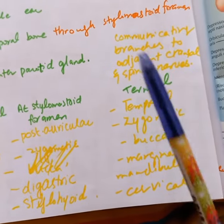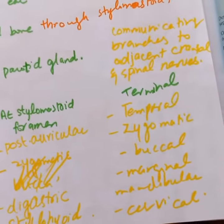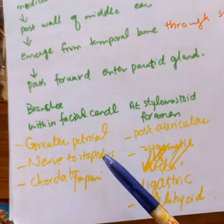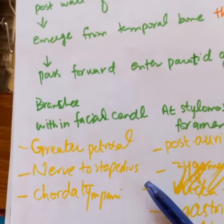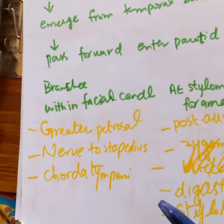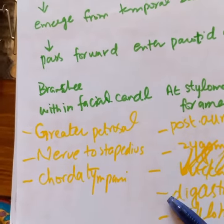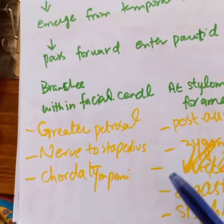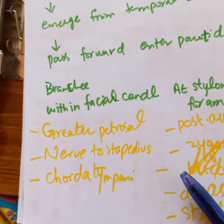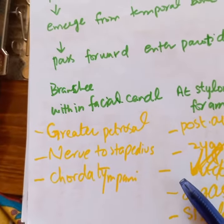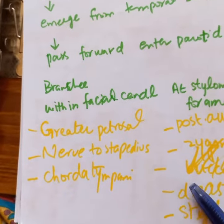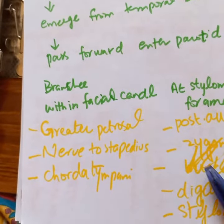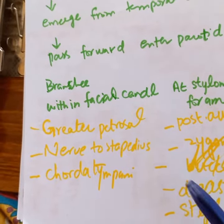There are also communicating branches to adjacent cranial nerves. The chorda tympani carries taste sensation. The nerve to stapedius supplies the stapedius muscle in the middle ear, which provides a dampening effect on loud sounds. If the facial nerve is damaged, there is no dampening effect, causing hypersensitivity to sound (hyperacusis).